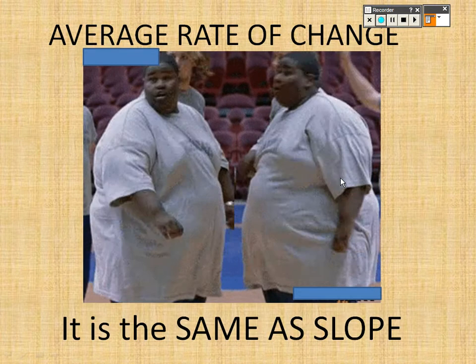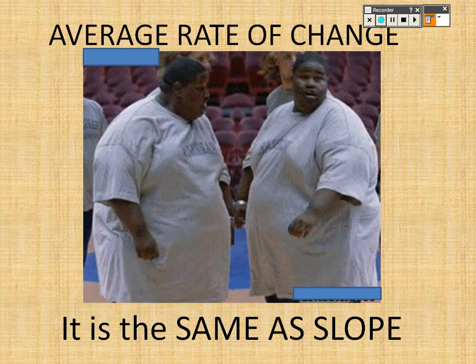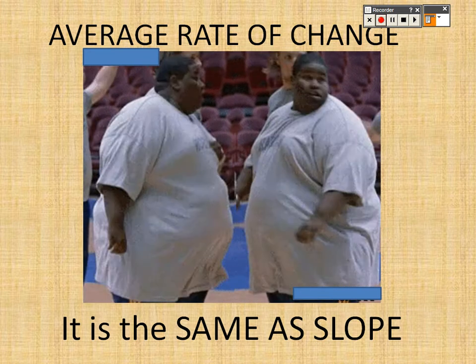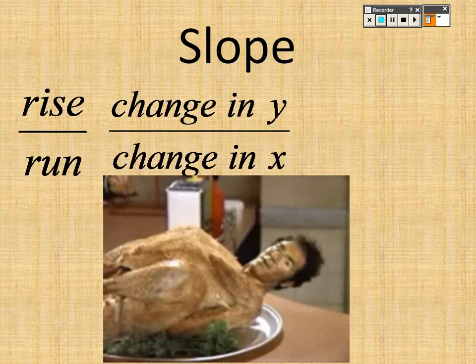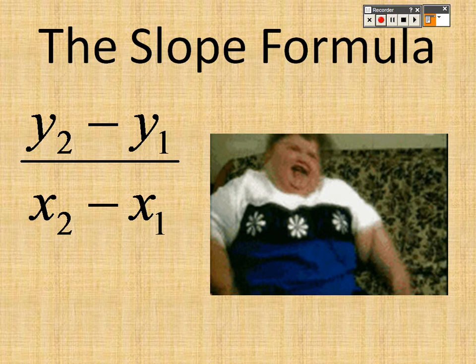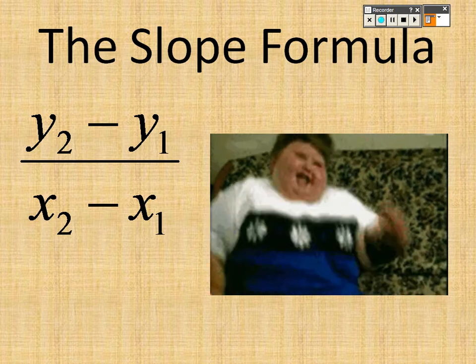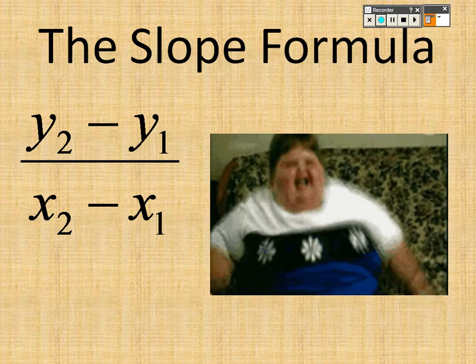Average rate of change is the same as slope. The slope is rise over run — change in y over change in x — which is y2 minus y1 over x2 minus x1. That's the slope formula. You need two points to use it.